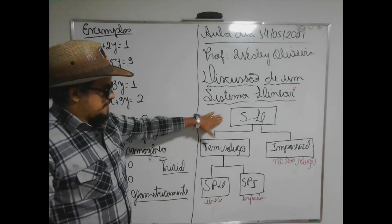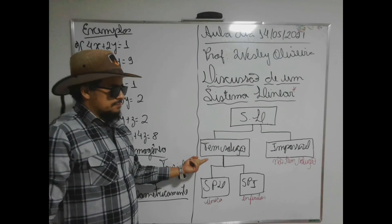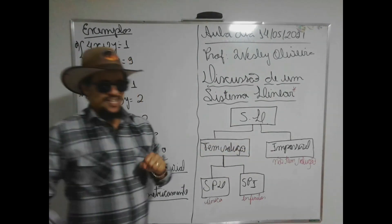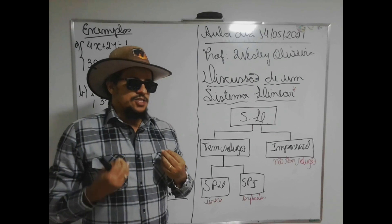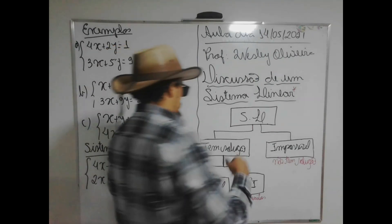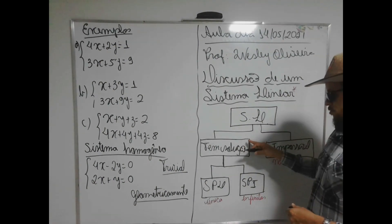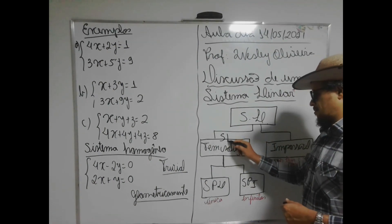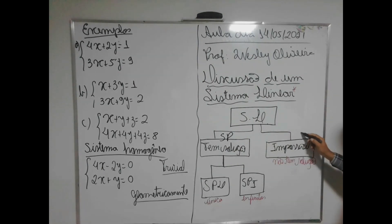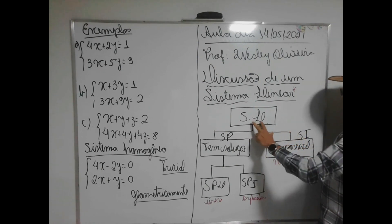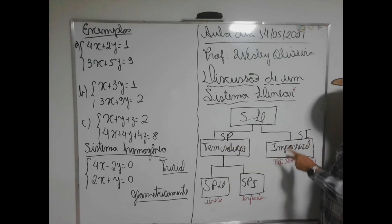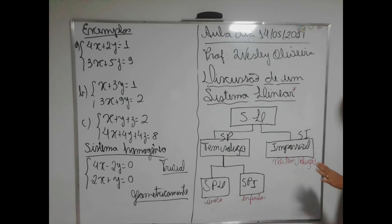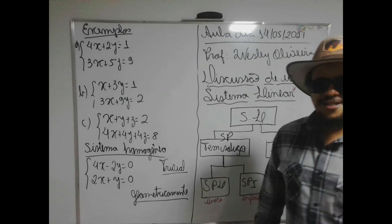Eu tenho sistema linear: tenho sistema que tem solução e tenho sistema que não tem solução, chamado de impossível. Quando ele tem solução, eu chamo de SP. Quando ele não tem solução, eu chamo de SI. Só tem esses dois caminhos para o sistema linear: ou ele é um sistema possível, ou ele é um sistema impossível — SI. Quando cai no SI, não tem solução, a gente não resolve.